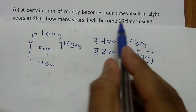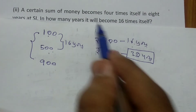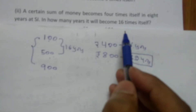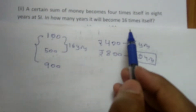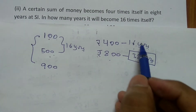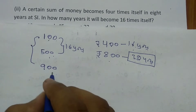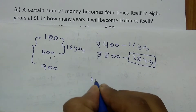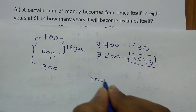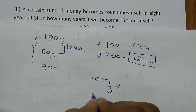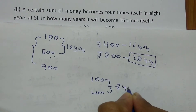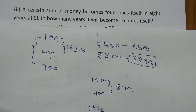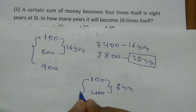A certain sum of money becomes 4 times itself in 8 years at simple interest. In how many years will it become 16 times? Since you don't know how much was deposited, take 100 rupees. Four times means 400 rupees in 8 years. Sixteen times means 1600 rupees.